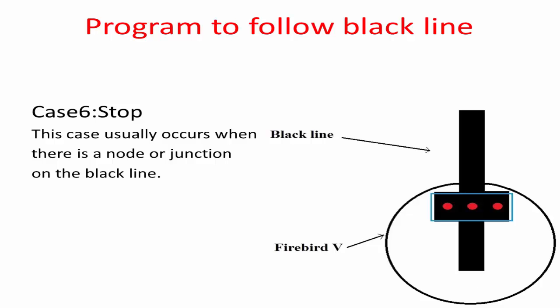Case 6: when the black line is below all three line sensors, this usually occurs when there is a node in the line. In this case, the robot should be made to stop in order to make a decision about what the robot should do next.